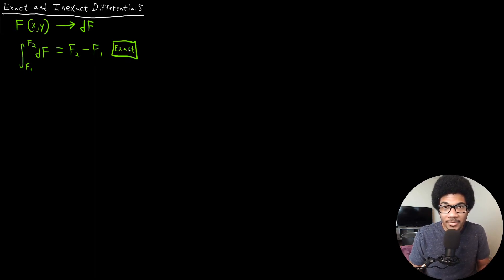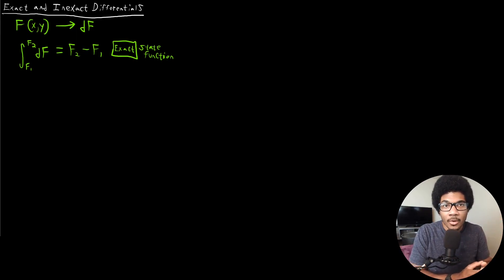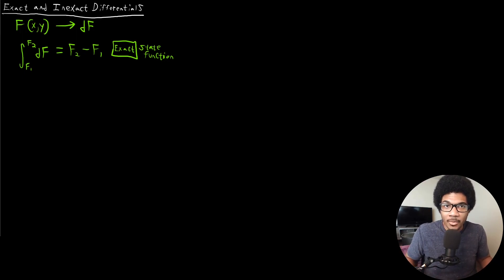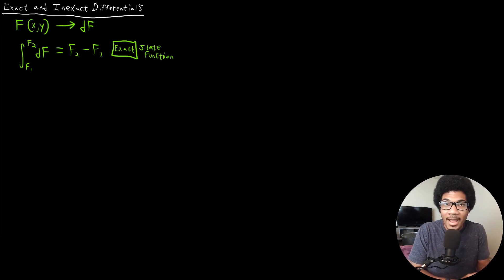Any property that follows this and is an exact differential, we call these state functions. A state function is simply something that depends on the initial and final state of that function only, and doesn't depend on the path that it takes to get there. You're already familiar with a few variables that are state variables — take something like volume. The change in volume is just going to be the final volume minus the initial volume; it doesn't depend on the path.